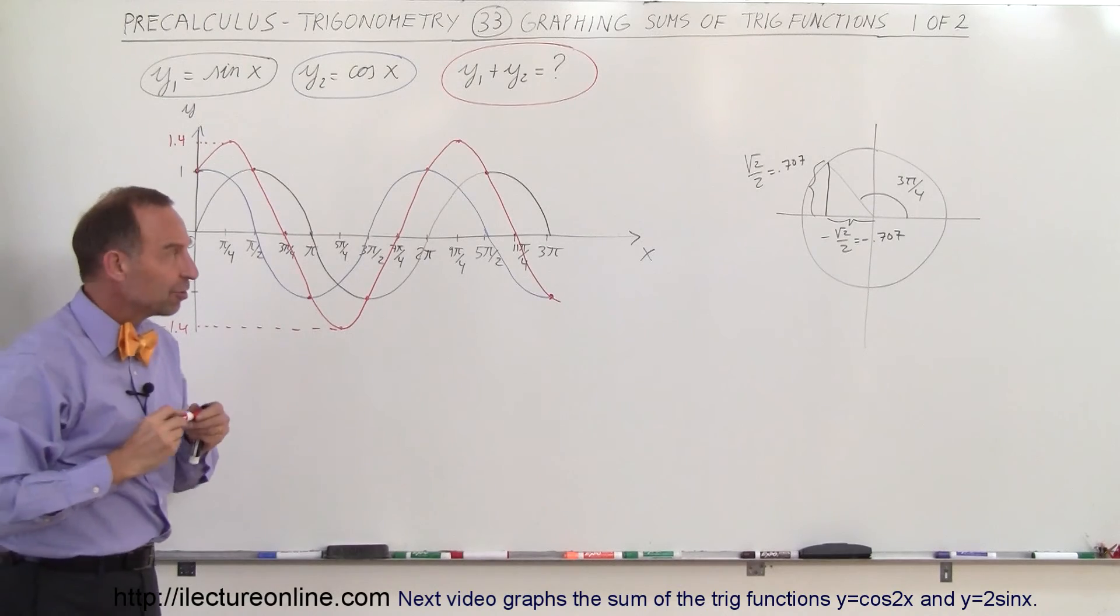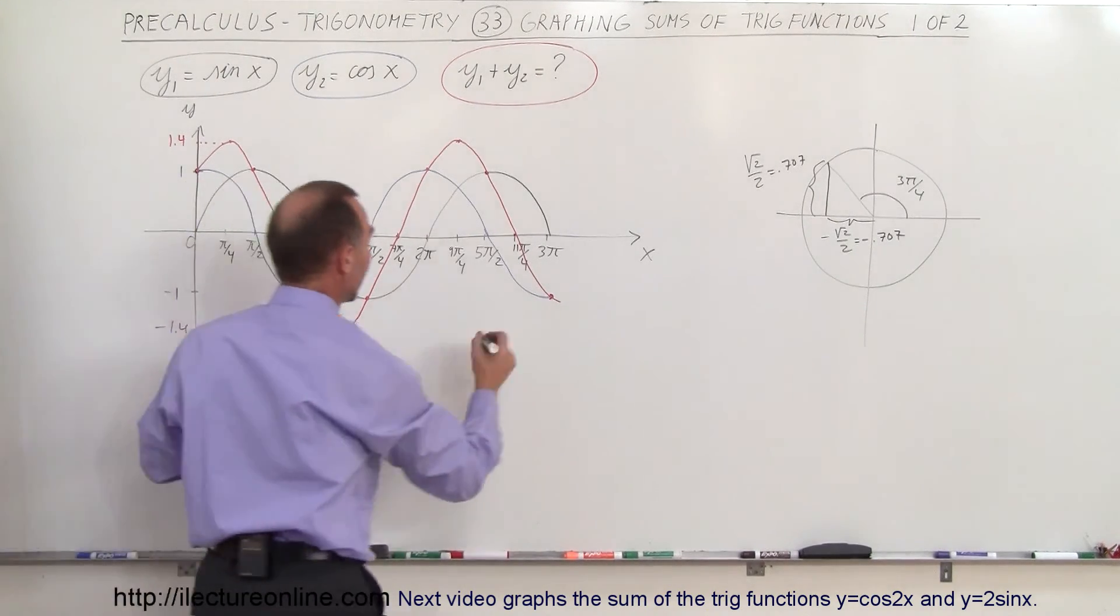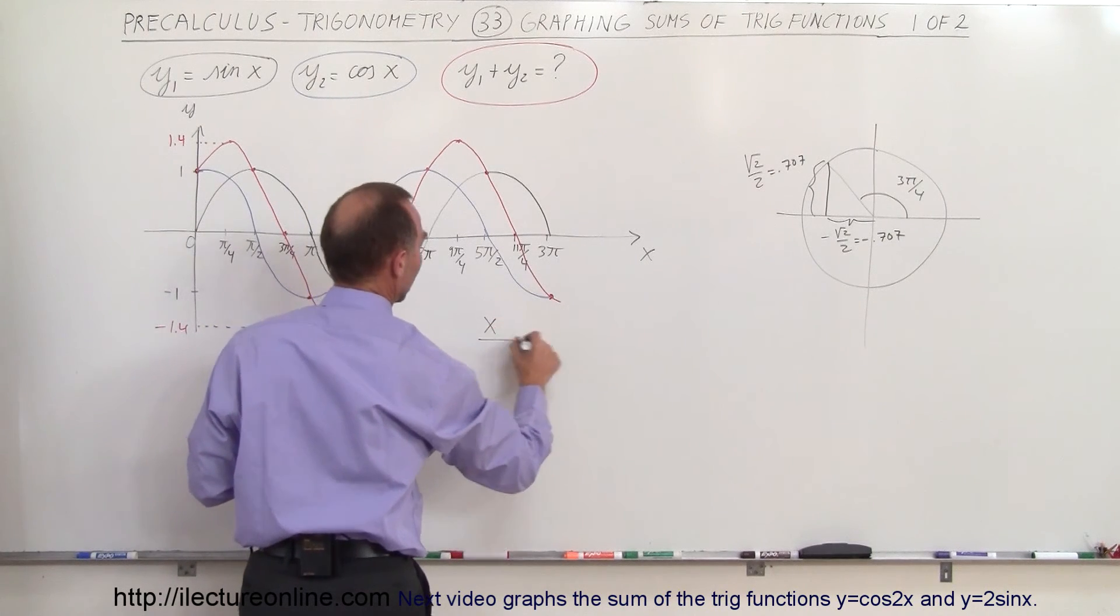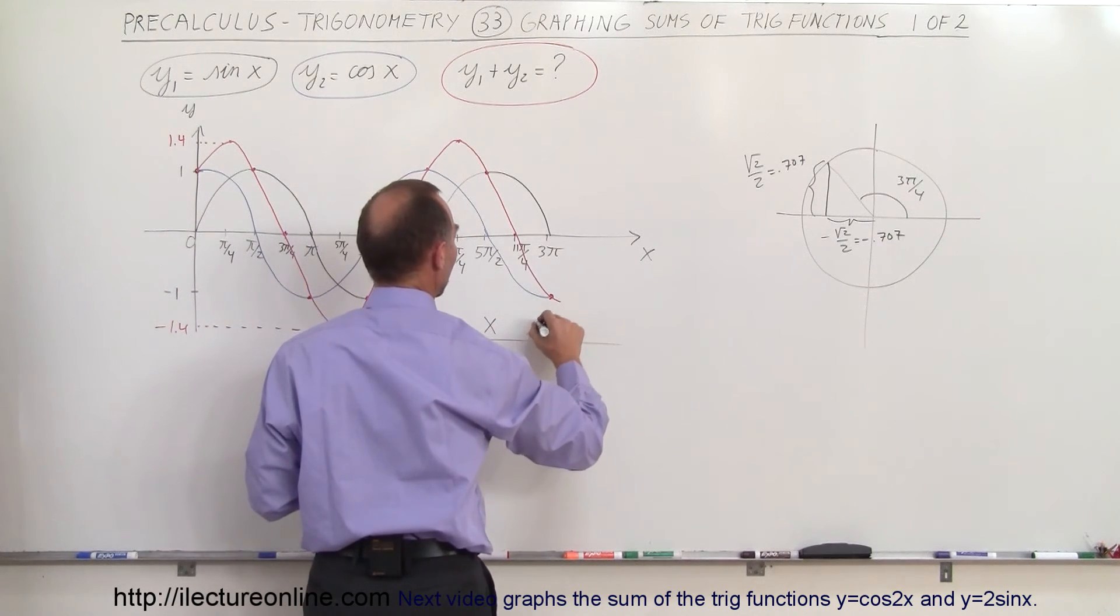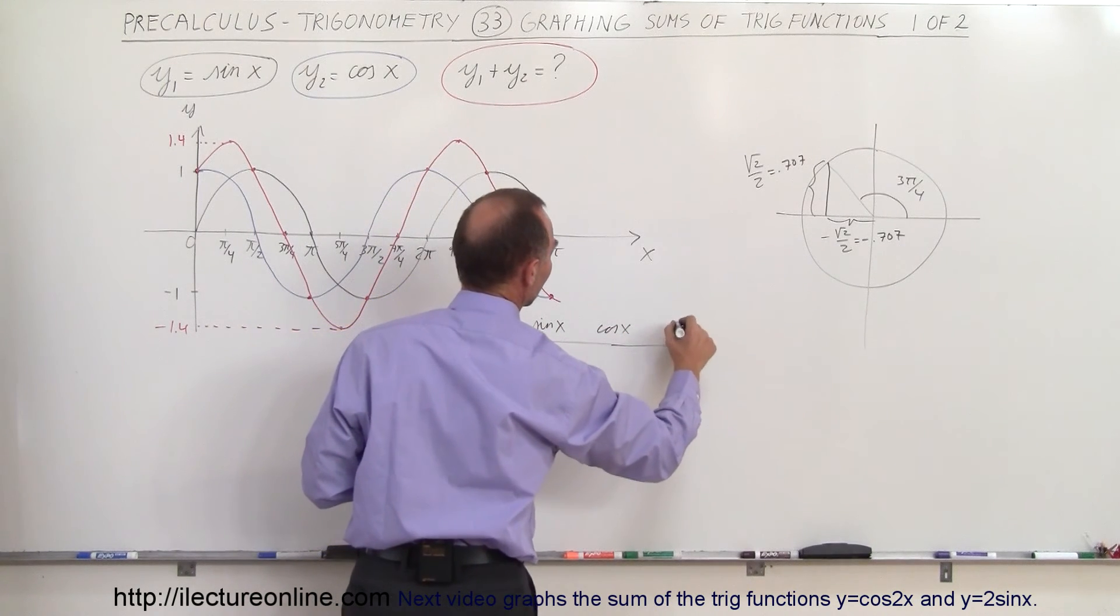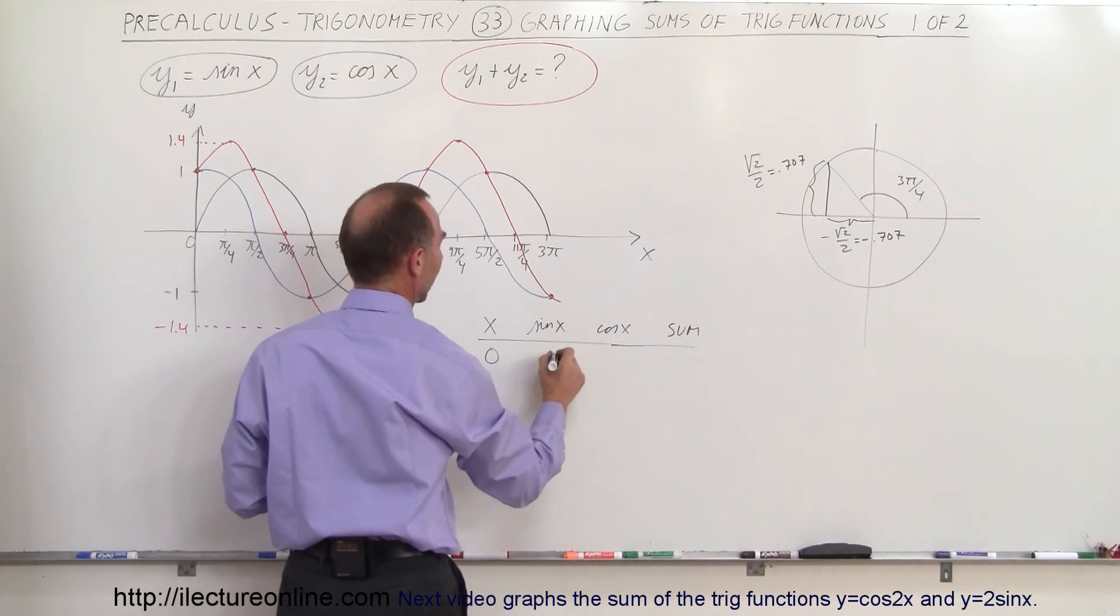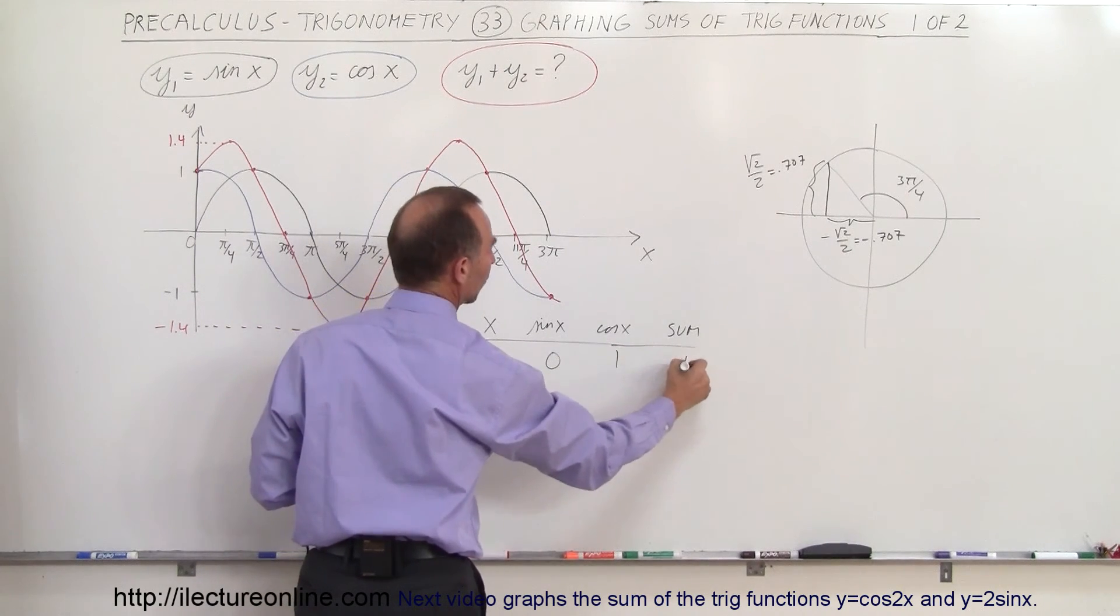Now, if you're not sure how to do it like this, what you can also do is put up a table of values. You can put up the angle, x. Then you can say, what is the sine of x? What is the cosine of x? And then you simply sum them together. So when x is equal to 0, the sine is 0, the cosine is 1, the sum is 1.